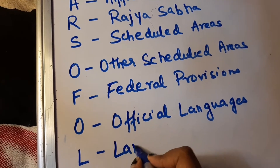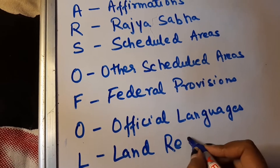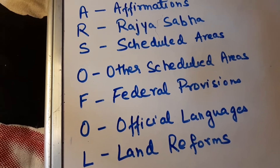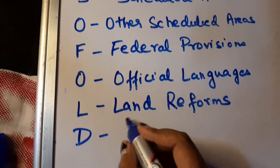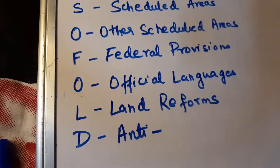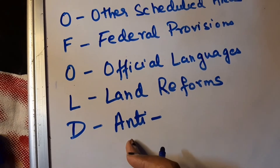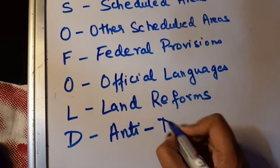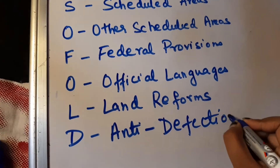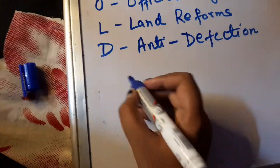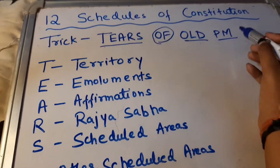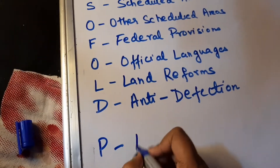With L we see Land Reforms, so Schedule 9 deals with land reforms. With D we get the Anti-Defection Law — this is very important and UPSC and even state PCS exams have frequently asked questions on this. Schedule 10 covers the anti-defection law, so you have to remember all of them.